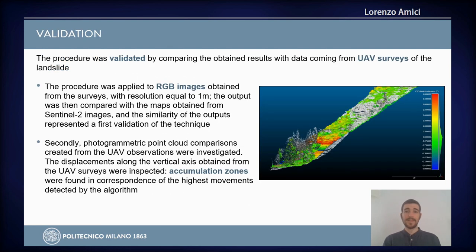The procedure was validated using data from UAV surveys of the landslide. Firstly, the procedure was applied to RGB images from the surveys and the results were found to be very similar to those obtained with satellite images. Secondly, the displacement along the vertical axis obtained from the surveys was inspected, and the accumulation of material was found in correspondence with the highest movement detected by the algorithm, confirming the validity of the procedure.